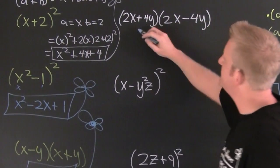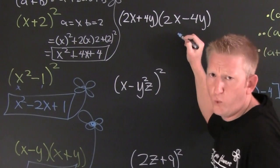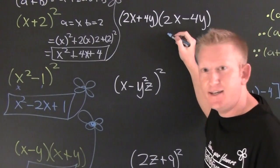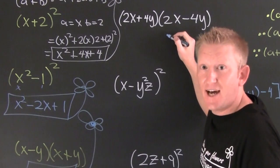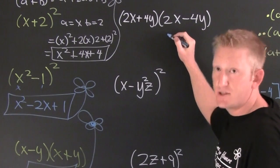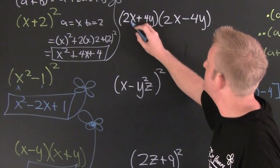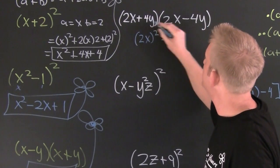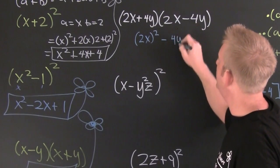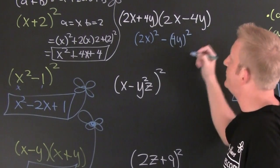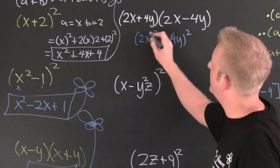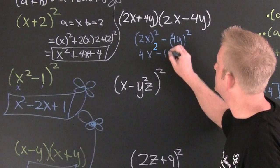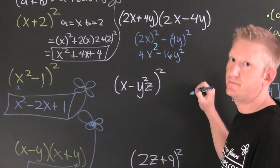Take a look at this one. It does appear to be a difference of squares. Every single time it's this one squared — 2x squared — minus this one squared — 4y squared. After you finish, you get 4x² minus 16y².